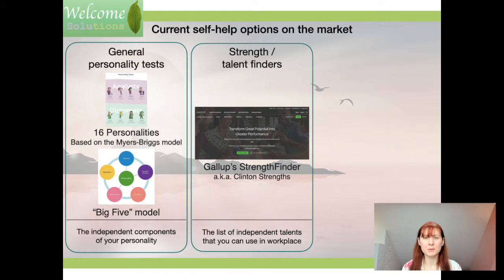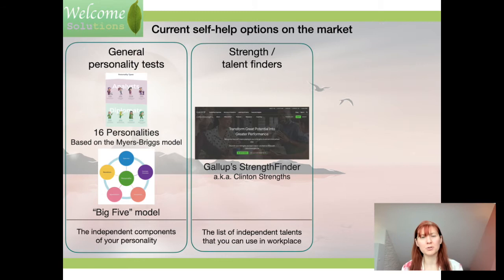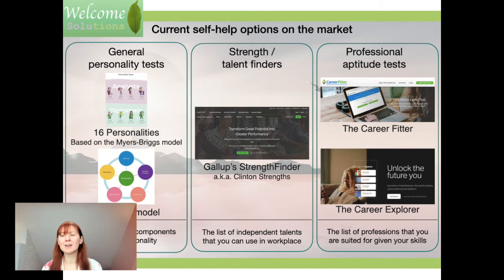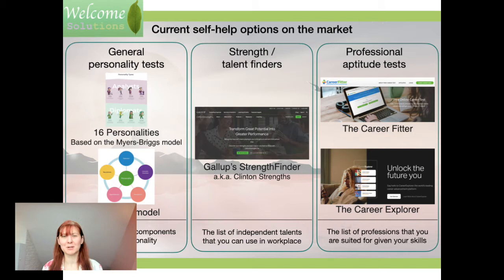The Gallup StrengthsFinder gives you tips on how to use those strengths in your career — you answer questions and receive a ranking of your top scores. And lastly, there are thousands of online professional aptitude tests that basically ask what your skills are and give you a list of matching professions. For instance, if you say you're a strong writer, they'll suggest you consider a writing career. They ask you to grade your skills and then suggest types of professions to consider.